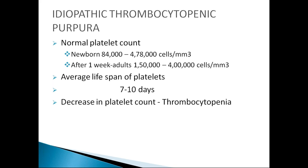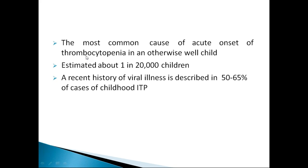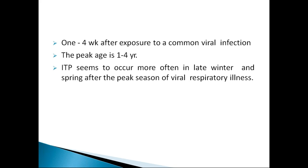The specific topic today is idiopathic thrombocytopenic purpura, also called immune thrombocytopenic purpura (ITP). This is the most common cause of acute onset thrombocytopenia in an otherwise well child — the child will not look sick. It is estimated to occur in about 1 in 20,000 children. A recent history of viral illness is found in 50–65% of cases, usually 1–4 weeks after exposure to a common viral infection. Peak age is around 1–4 years, and ITP occurs more often in late winter and spring after peak viral respiratory illness season.